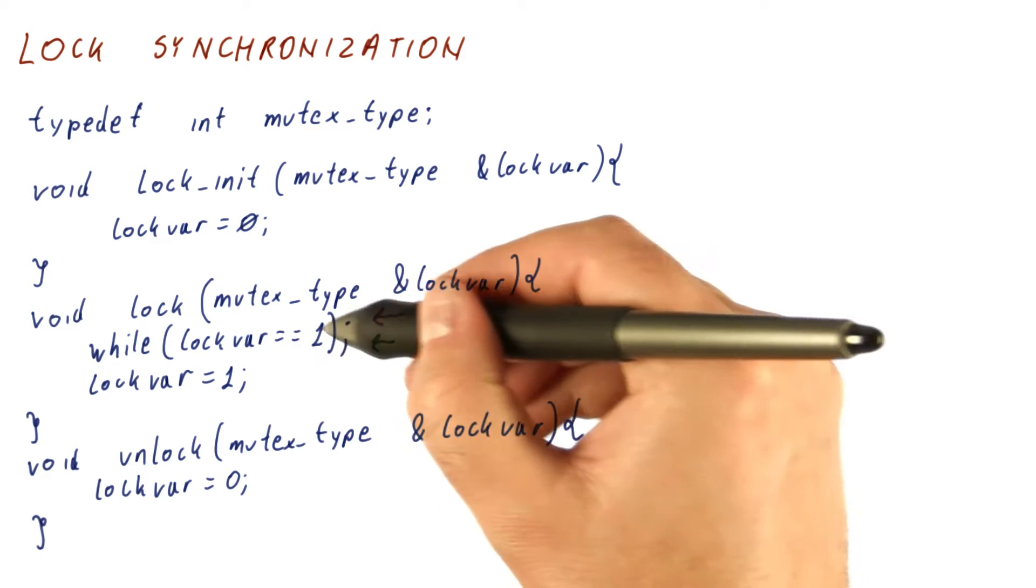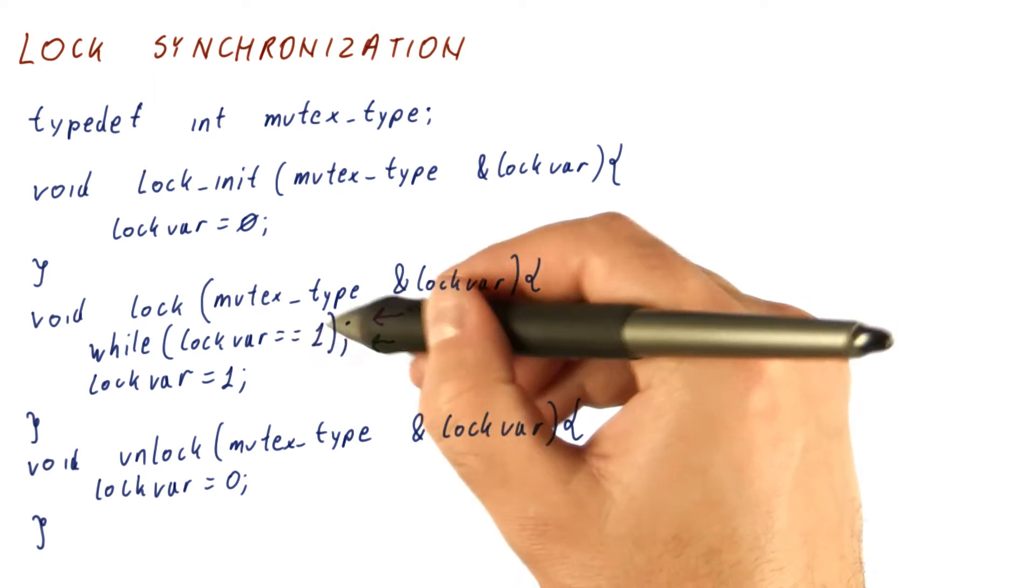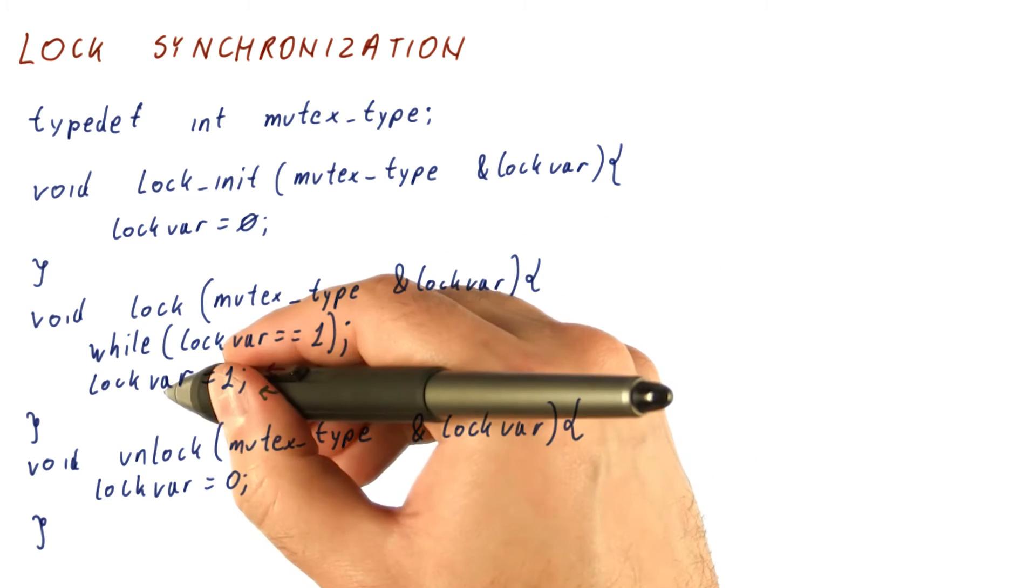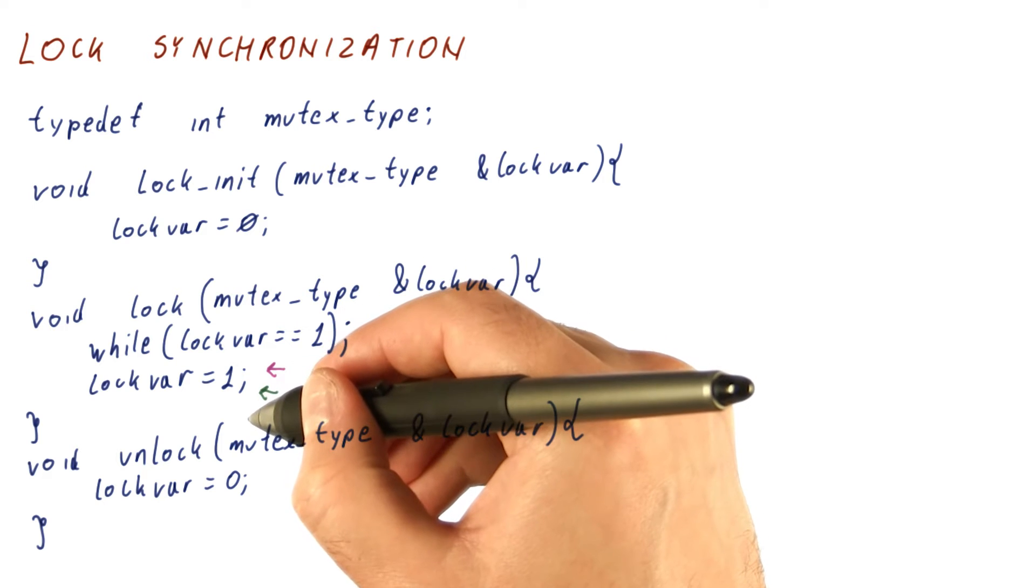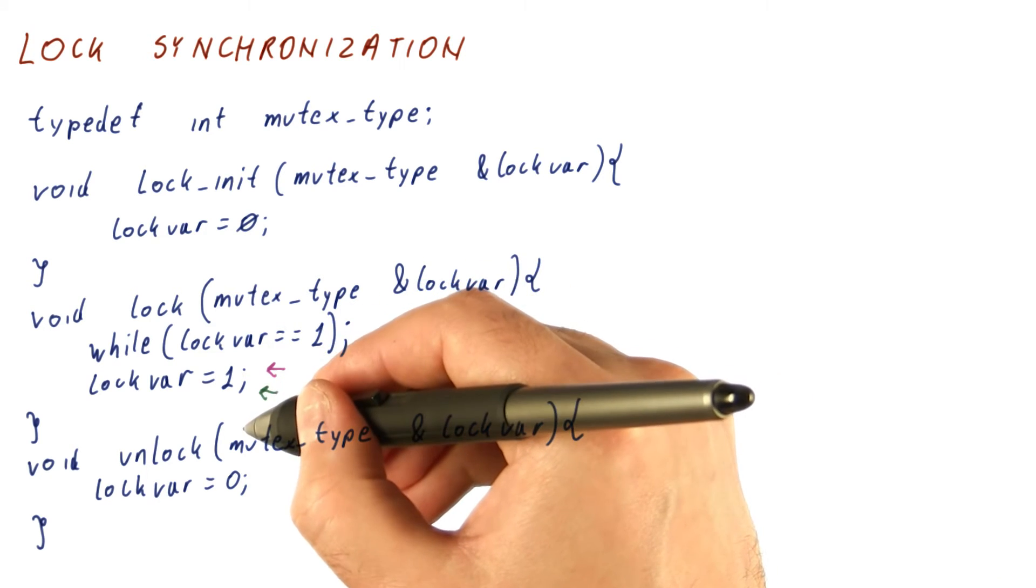Both of them read the lock var for the first time, see zero. Both of them exit this loop because the lock var is not one. So both of them come here, write one to the lock var, and then leave this lock function. Now both of them are in the critical section, which is what we were trying to prevent.